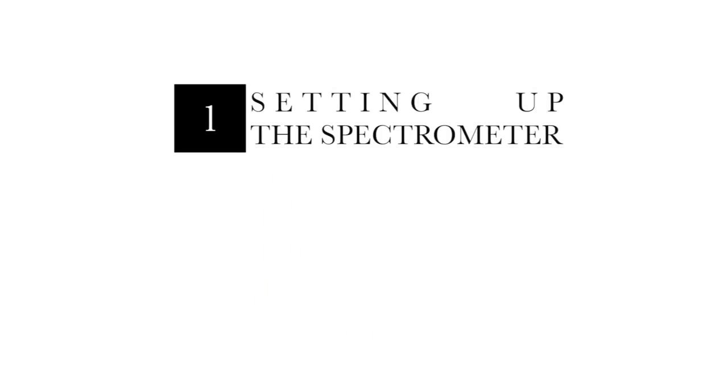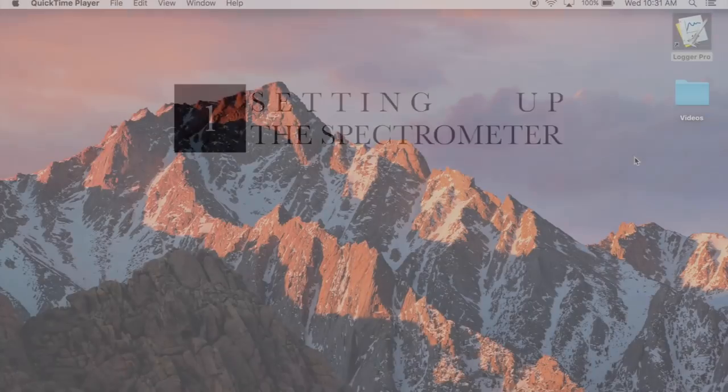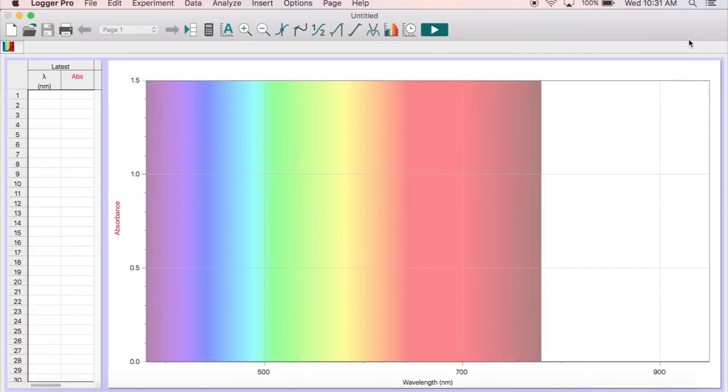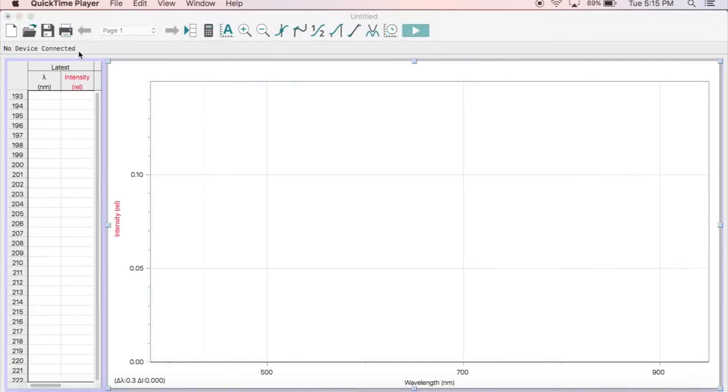To begin using the spectrometer for emission spectroscopy, you must first change a few settings. When you initially plug in the spectrometer, you should see a rainbow background on the screen. If you do not see this, it means the spectrometer is not communicating properly. Check the USB connection and relaunch LoggerPro if necessary.